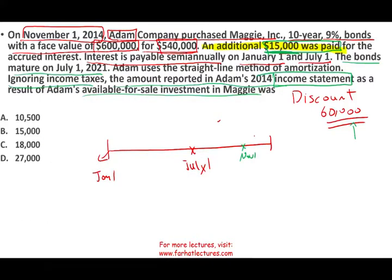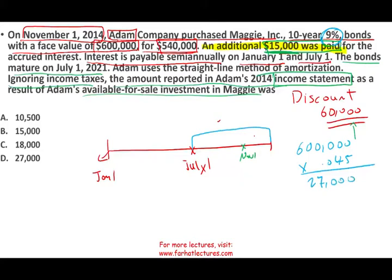How would you approach this problem? First, let's compute the interest for the whole six months. If Adam purchased the bond on July 1st, it's going to be $600,000 times 0.045. Why 0.045? The bond pays interest at 9% and we're computing the amount for six months. That gives us $27,000. So the total cash interest for this six-month period is $27,000.